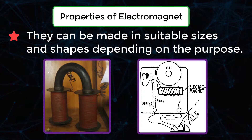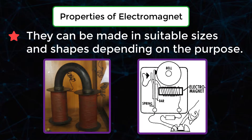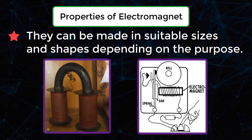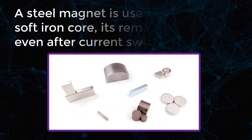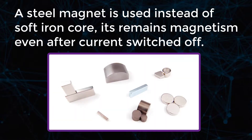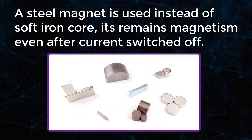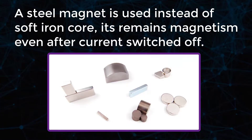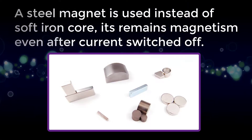Electromagnets can be made in suitable sizes and shapes depending on the purpose. If a steel magnet is used instead of a soft iron core, it remains magnetized even after the current is switched off.